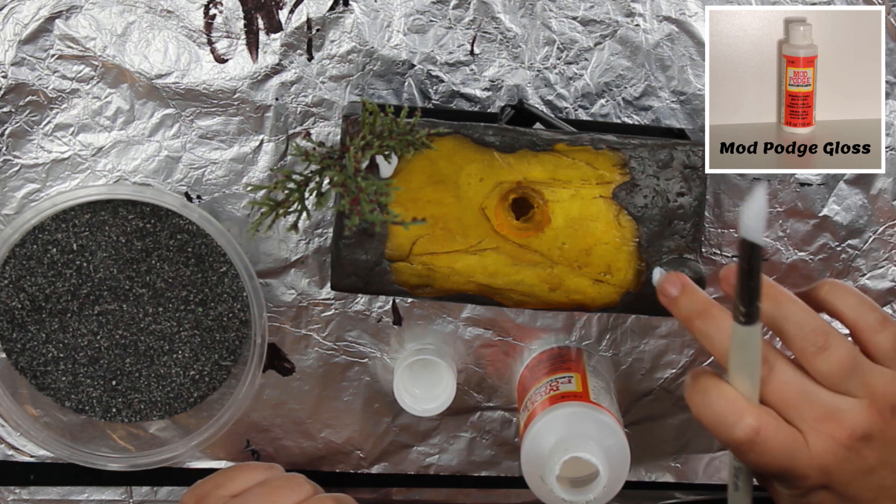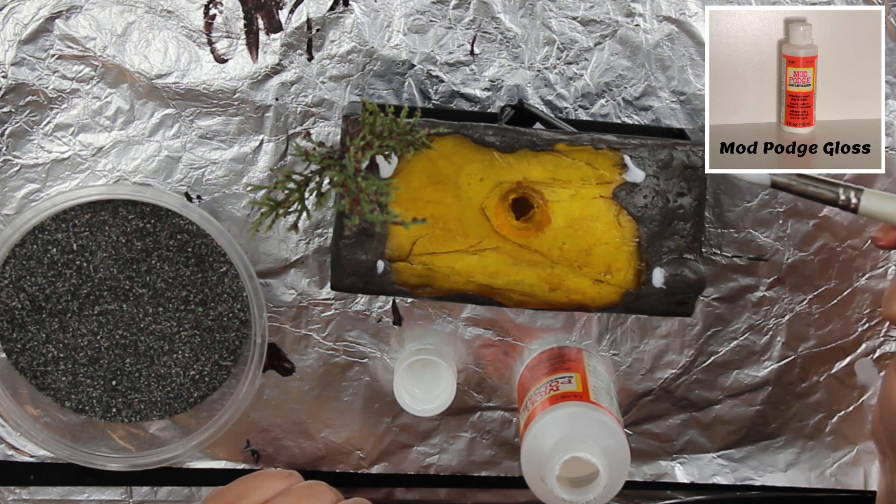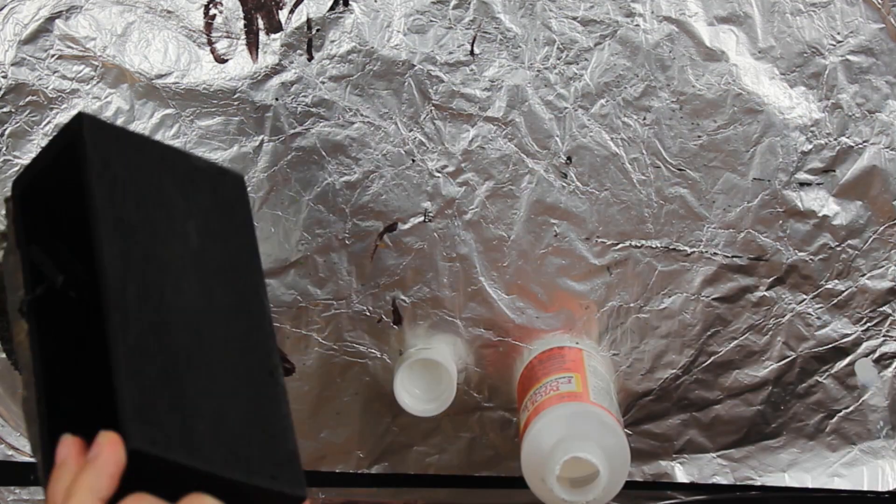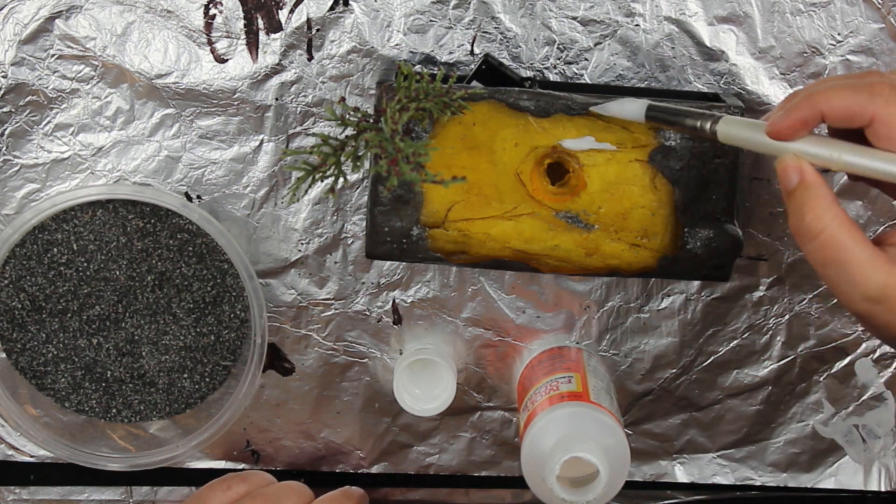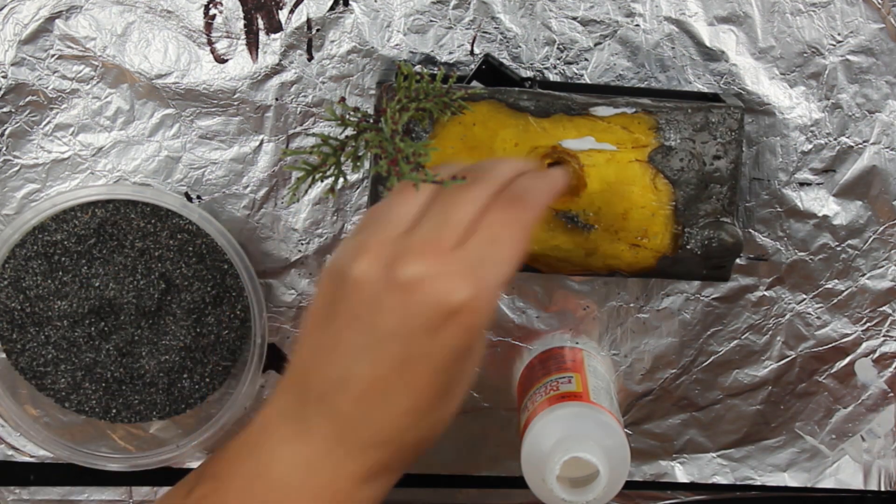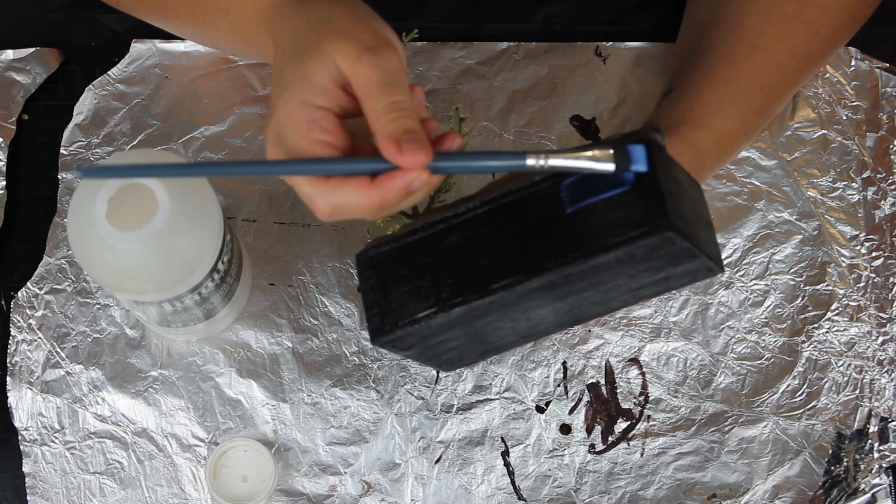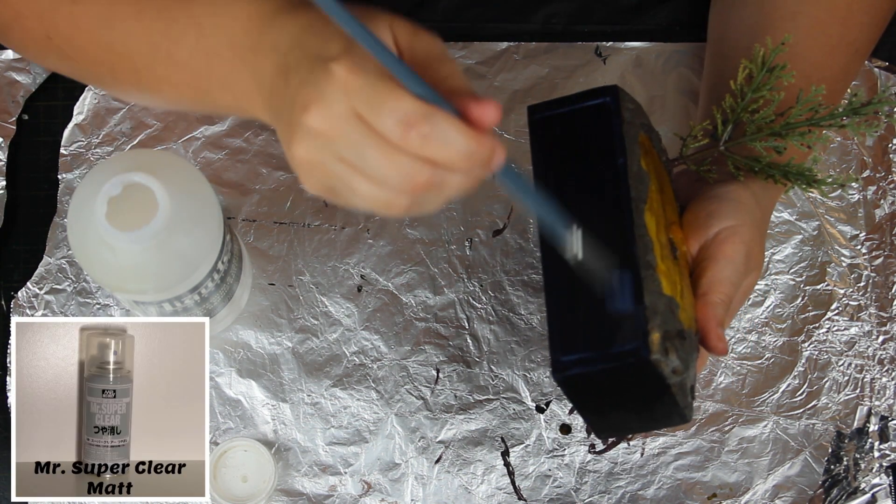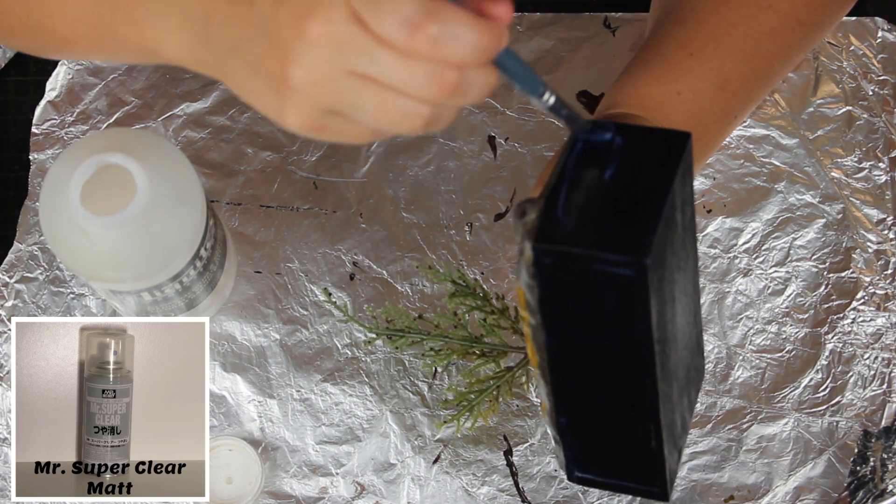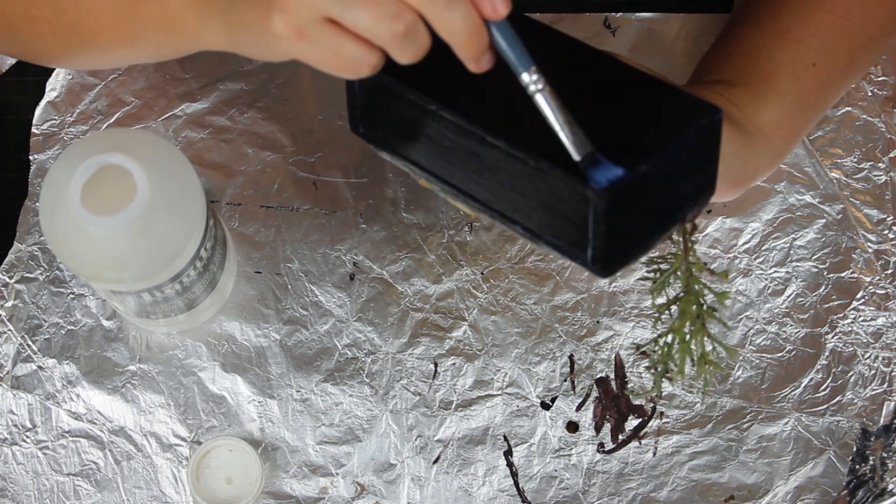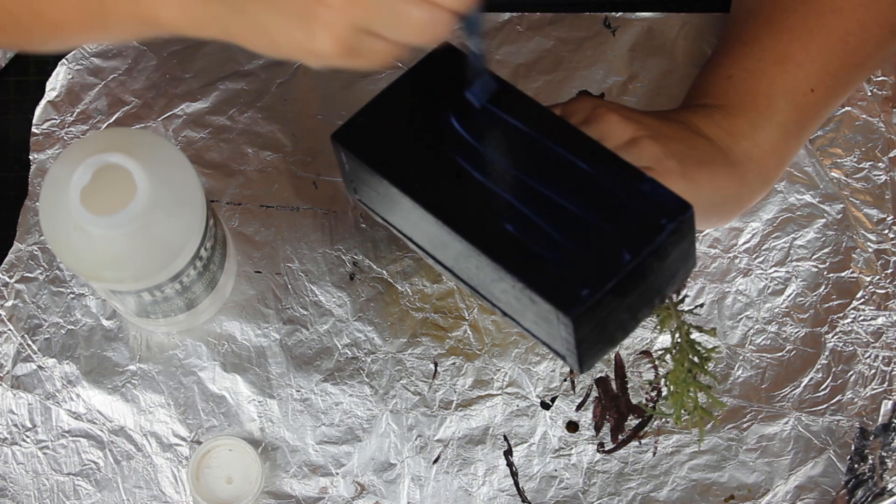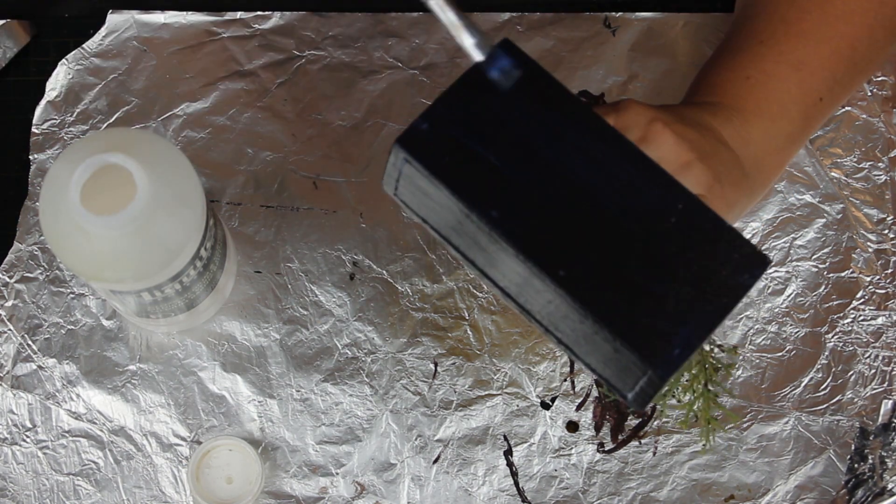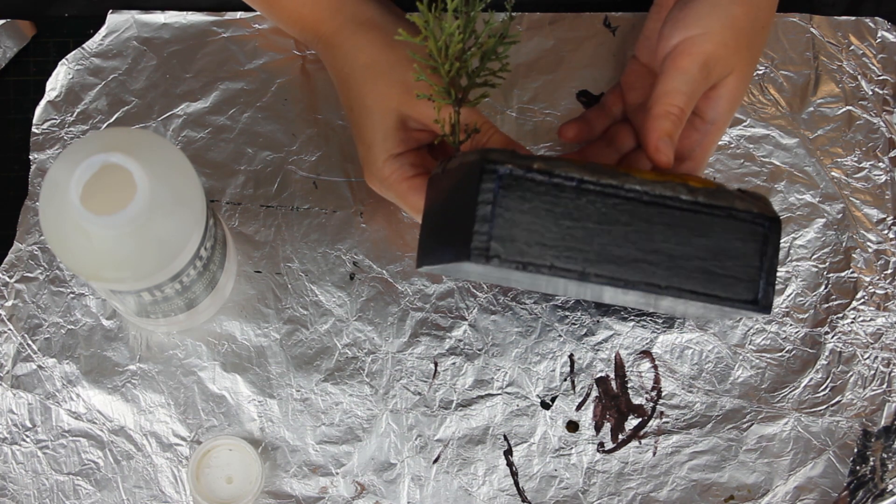So now I'm using Mod Podge and I'm dabbing it in small selective areas just to glue down my gravel. Now I'm coming in with Liquitex high gloss varnish and I'm glossing up the black area of the box. I've sealed the scenery part of the box in Mr Super Clear matte varnish, and that's the box all glossed up and ready for its plaque.